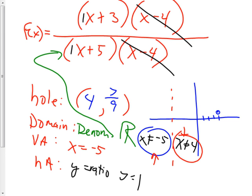If there's no canceling, the only difference is then there's no holes. If this hadn't canceled — like maybe one of these had been a plus and one was a minus so they wouldn't cancel — then I would have still had the same domain, but both of them would have been asymptotes, because you can have two asymptotes.